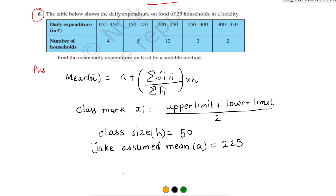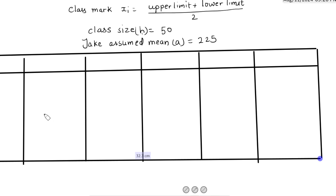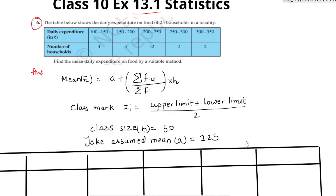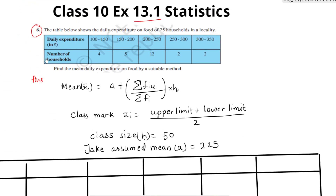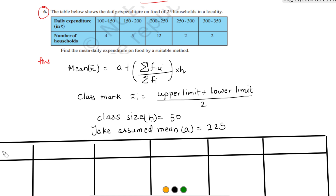In the step deviation method, we make six columns in our table. The first two columns come directly from the question: daily expenditure (in rupees) and number of households. The number of households is our frequency (fi). So column one is daily expenditure and column two is number of households.